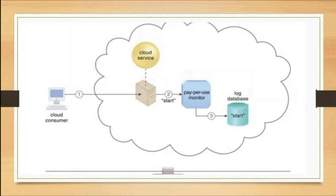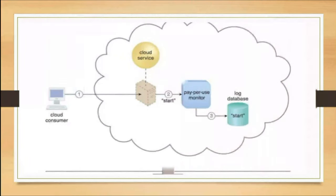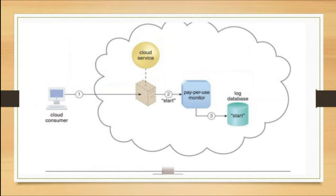With the help of a diagram, let us try to understand. Data is collected by the Pay Per Use Monitor, processed by the Billing Management System, and the payment fee is calculated. So inside this, we have a normal cloud consumer who is accessing the cloud service. Then according to use, from the three mechanisms we saw, according to their techniques.